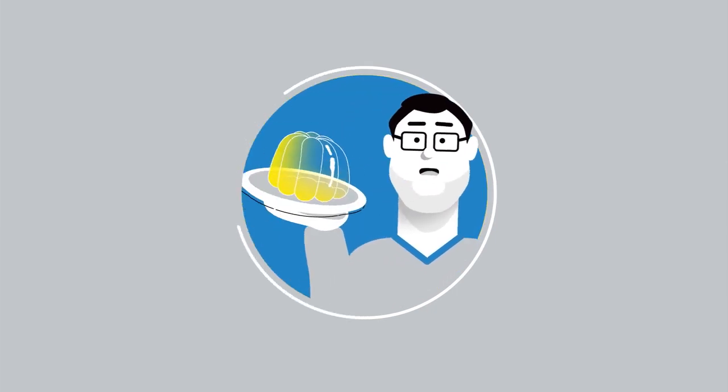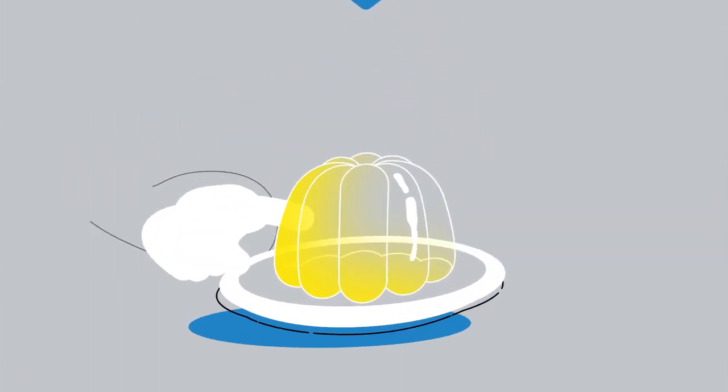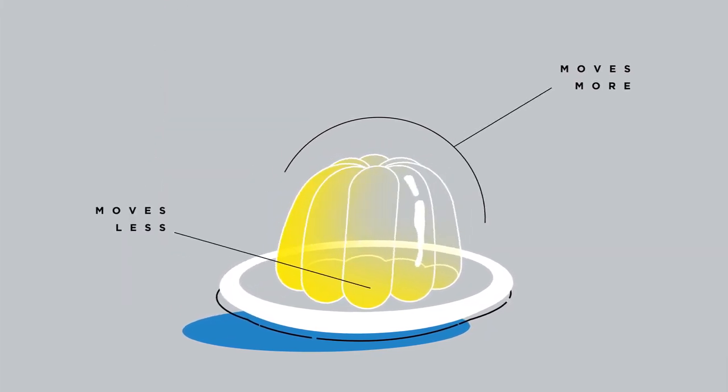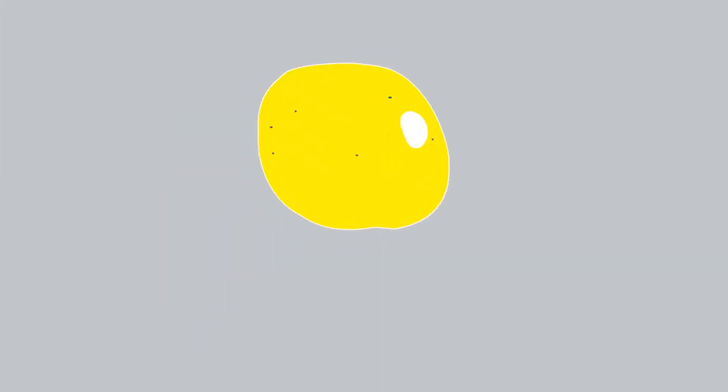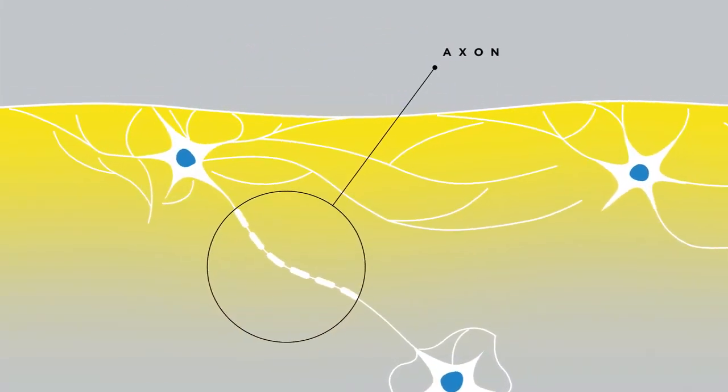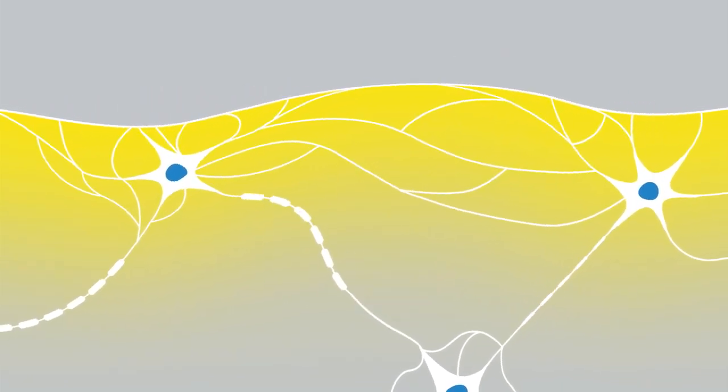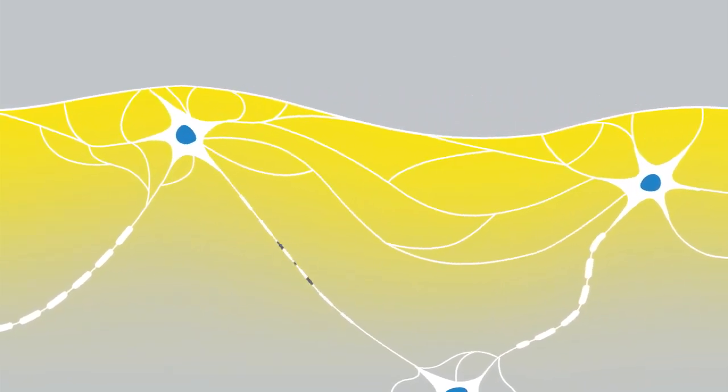Because your brain tissue is soft, similar to the consistency of gelatin, different sections of the brain can move at different rates. This rotational motion can cause axons, which are critical to normal brain function, to stretch and become damaged.